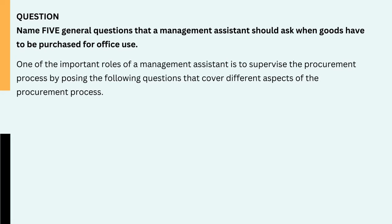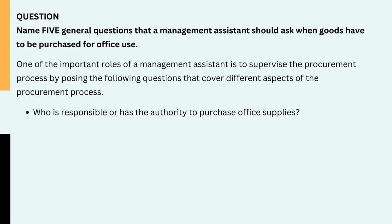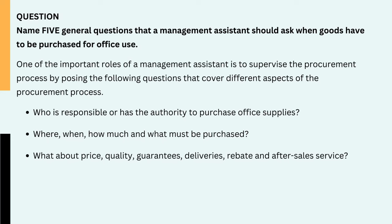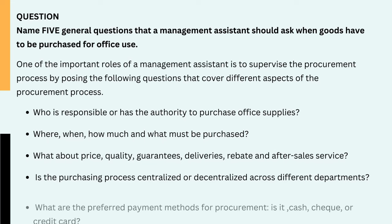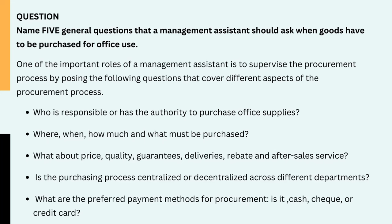One of the important roles of a management assistant is to supervise the procurement process by posing the following questions that cover different aspects of the procurement process: 1. Who is responsible or has the authority to purchase office supplies? 2. Where, when, how much and what must be purchased? 3. What about price, quality, guarantees, deliveries, rebate and after-sales service? 4. Is the purchasing process centralized or decentralized across different departments? 5. What are the preferred payment methods for procurement — cash, check or credit card?